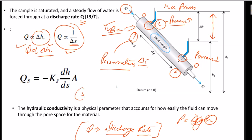The third conclusion was that Q, the discharge rate, is directly proportional to the cross-sectional area of the tube — that is pi r squared. Obviously, the greater the diameter of the tube, the greater the flow or discharge rate. So the three conclusions are: Q is directly proportional to the pressure gradient or elevation change, inversely proportional to the length of the sample, and directly proportional to the cross-sectional area.